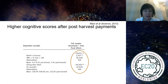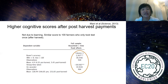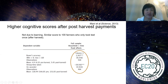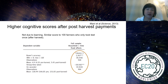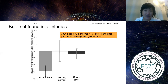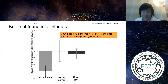The improvement was equivalent to a few IQ points — a significant effect. They verified it was not due to learning by holding aside 100 farmers who only took the test once, after harvest. However, this effect of poverty on cognitive control is not found in all studies. Carvalho, Meier, and Wang (2016) did not find a difference in cognitive performance.